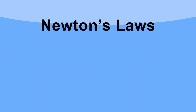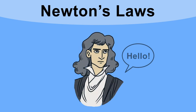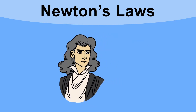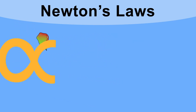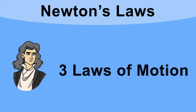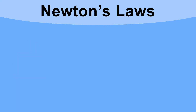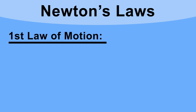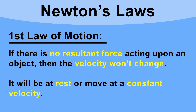Newton is the father of modern physics and is most famous for having an apple drop on his head, although this probably didn't actually happen. He did formulate three laws of motion which are fundamentally important in physics. Newton's first law states that if there is no resultant force acting on an object, then its velocity will not change — it must either remain at rest or stay moving at a constant velocity.